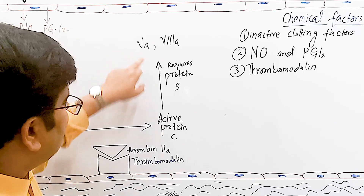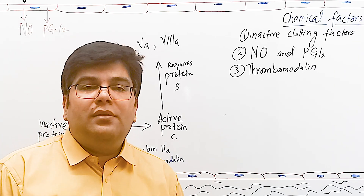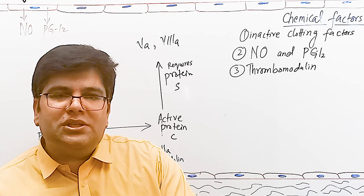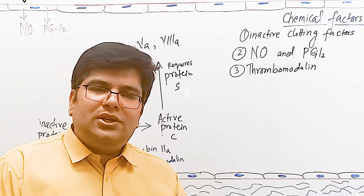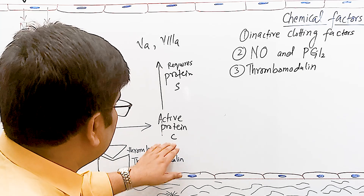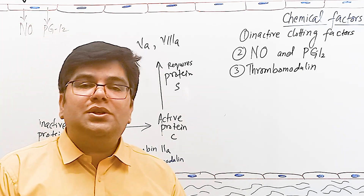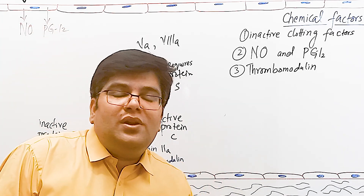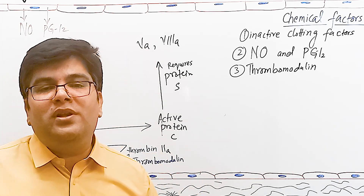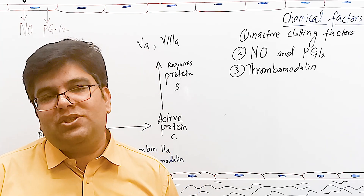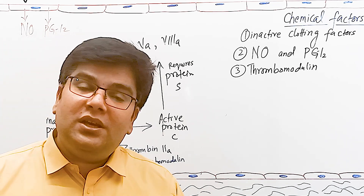There is a condition in which clotting factor number 5 is resistant due to mutation and hence is not inactivated by protein C — this increases the risk of clotting because anticoagulation is decreased. There is another condition in which either protein C or protein S may be deficient in the blood, which can also decrease anticoagulation and hence increases clotting tendency, raising the risk of thromboembolism.